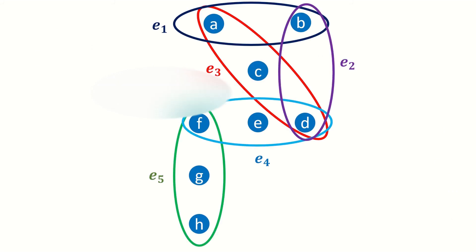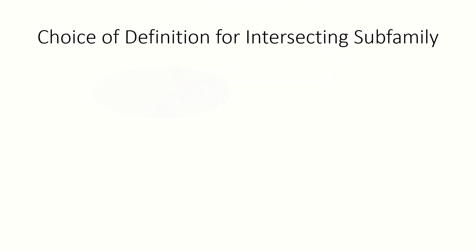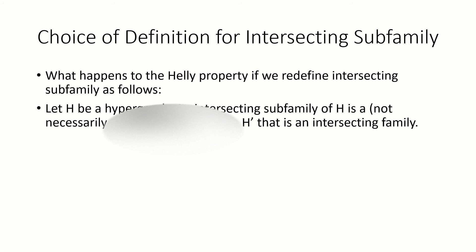Let's look at another example now. Is this hypergraph heli? It's not heli because there's an intersecting subfamily that is not a star. Now you might be wondering what would happen if we define intersecting subfamilies to be subhypergraphs only, and not partial subhypergraphs.